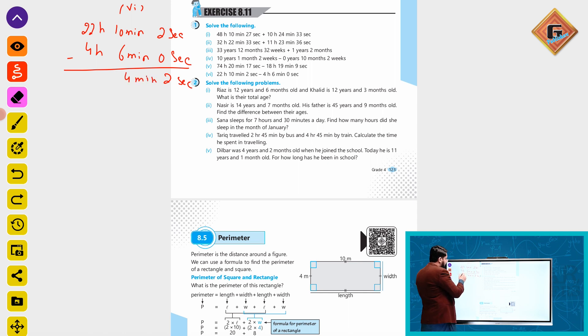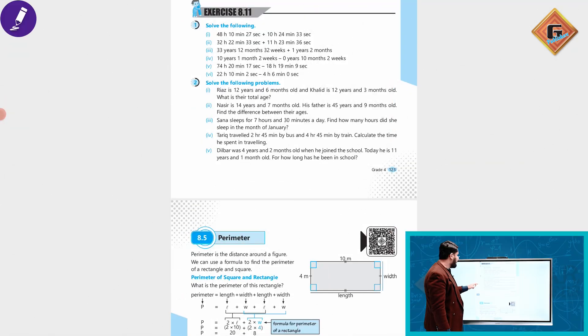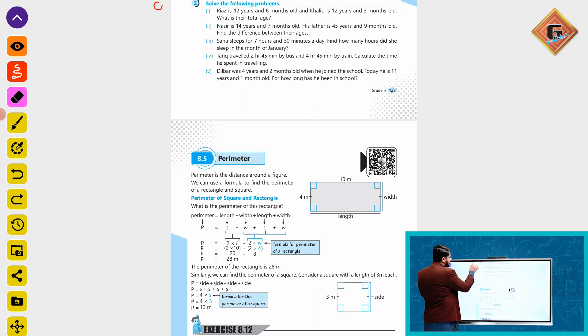Riyaz is 22 years and 6 months old and Khalid is 12 years and 3 months old. What is their total age? The total age is how much? Question 2.